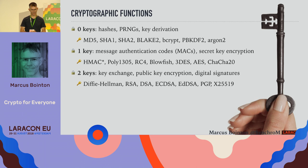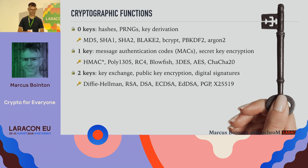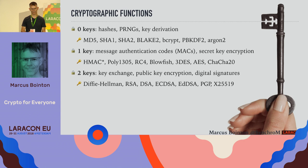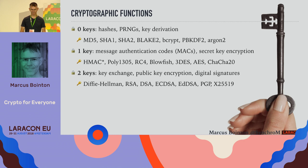Then we have things with two keys — public key encryption — used for key exchange and digital signatures. Some of these names have odd numbers in them, like Poly1305 and X25519. These are often references to the prime numbers used in the underlying cryptography. For Poly1305, the prime number is 2 to the power of 130 minus 5. For 25519, it's 2 to the power of 255 minus 19 — a really big number.